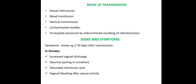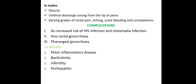Signs and symptoms: females have vaginal discharge, dysuria, disturbed menstrual cycle, and vaginal bleeding after sexual activity. Males have urethral discharge, oozing from the tip of the penis, varying grades of rectal pain, itching, scant bleeding, and constipation.